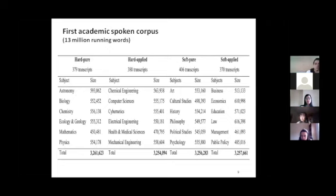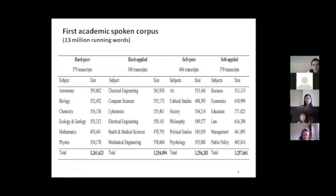You can see the structure of the corpus on the slide. It has four sub-corpora: hard-pure, hard-applied, soft-pure, and soft-applied. Each sub-corpus has six subject areas, and each subject area has around 500,000 words. All together, each sub-corpus has 3.25 million words. The corpus represents academic speech from 24 subject areas. The reason we did this is so that the corpus is very balanced and represents material from a range of subject areas, so it can benefit students from different disciplines.